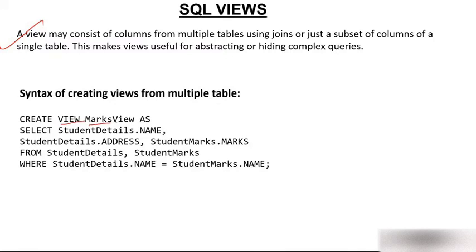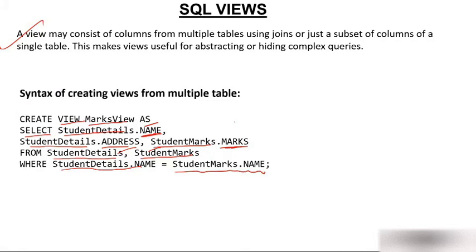The syntax for a multi-table view: CREATE VIEW marks AS SELECT student_details.name, student_details.address, student_marks.marks FROM student_details, student_marks WHERE student_details.name = student_marks.name. So there are two tables — student_details and student_marks — and you are selecting columns from both, similar to what you have done in joins.